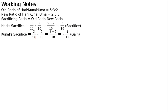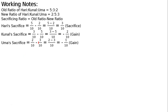Kunal's sacrifice = 3/10 − 5/10 = −2/10 (i.e., Kunal gains 2/10). Uma's sacrifice = 2/10 − 3/10 = −1/10 (i.e., Uma gains 1/10). So Hari is sacrificing 3/10, while Kunal gains 2/10 and Uma gains 1/10. The journal entry will be: gaining partners debit, sacrificing partner credit, based on the old ratio of 5:3:2.